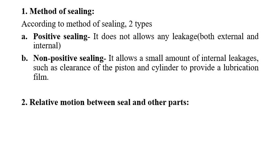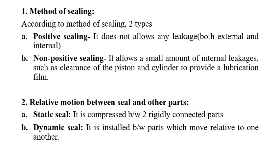Second classification — relative motion between seal and other parts: here also two types: static seal and dynamic seal. Static seals are compressed between two rigidly connected parts; they are used between mating parts that do not move relative to each other. Dynamic seals are assembled between mating parts that move relative to one another.